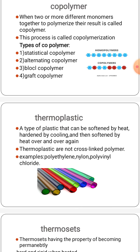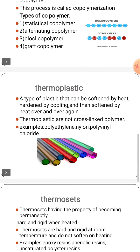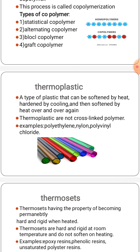Next one is thermoplastic. Thermoplastic is usually a plastic polymer. When thermoplastics are heated to their melting point, they melt to a liquid. They freeze to a glassy state when cooled below the glass transition temperature. A type of plastic that can be softened by heat, hardened on cooling, and softened by heat over and over again. Thermoplastics are not cross-linked polymers.